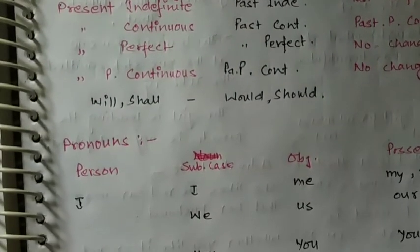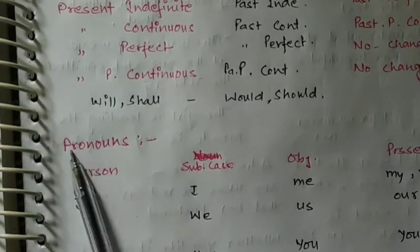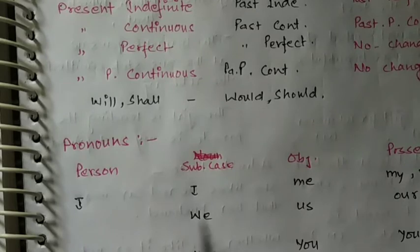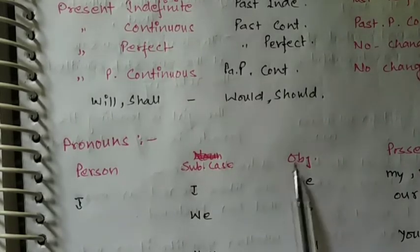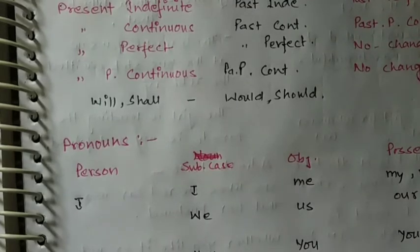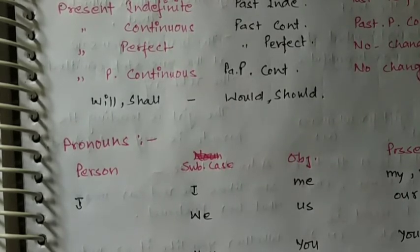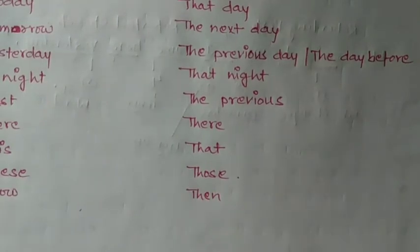Now let's come to the pronoun chart. There will be pronoun changes, so you must remember all these. There are first person, second person, and third person pronouns, and there are subjective case, objective case, and possessive case. Practice it like this: I, me, my, mine; we, us, our; you, you, your; he, him, his; she, her, her; it, it, its; they, them, their. Practice all these charts. There will also be one shortcut called 'SUN upon 1, 2, 3' related to pronoun change.